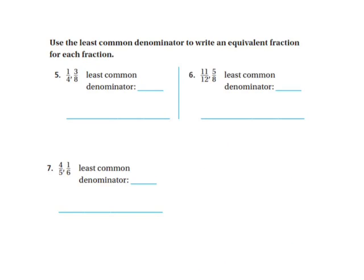Today we talked about finding the least common denominator, and we went over two different ways of doing that. One of them is the multiples method, and the other one is the ladder method. I'm going to show a few examples of both of those methods.